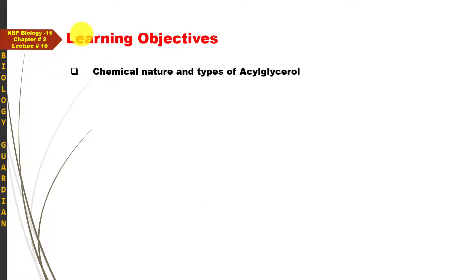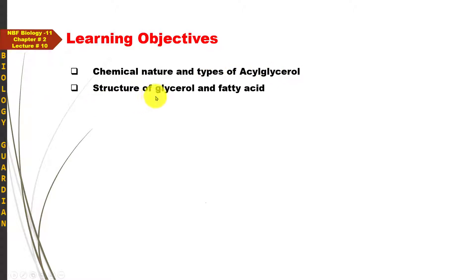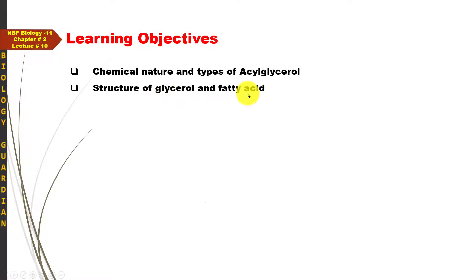ہم اسی سلسلے کو آگے بڑھاتے ہوئے آج کے lecture میں discuss کریں گے chemical nature and types of acylglycerols، جو کہ simple lipids کی ایک قسم ہے۔ Acylglycerols چونکہ دو چیزوں کے بنے ہوتے ہیں — fatty acid اور glycerol — لہٰذا structure of fatty acid and glycerol بھی ہم اس lecture کے اندر discuss کریں گے۔